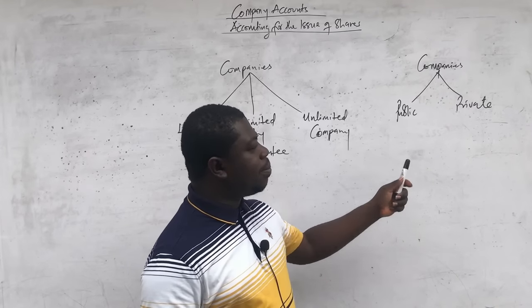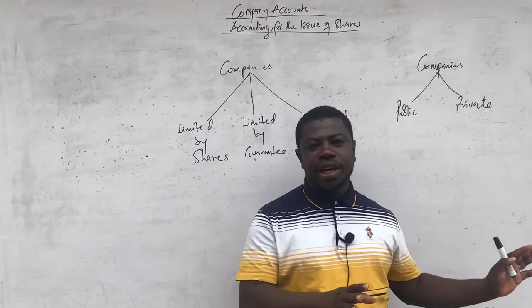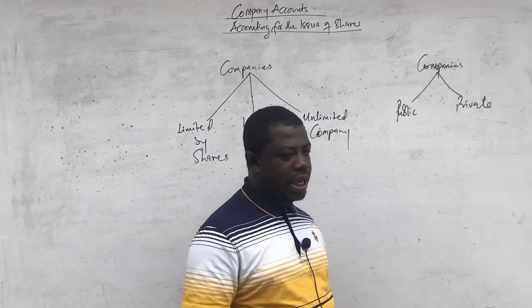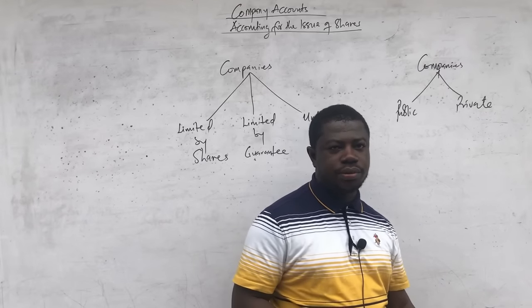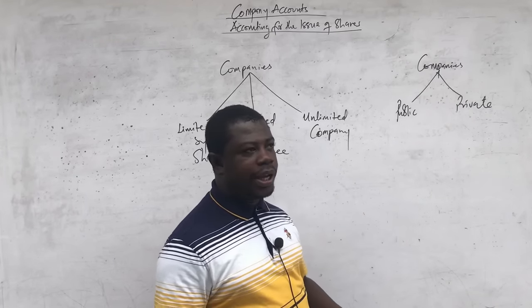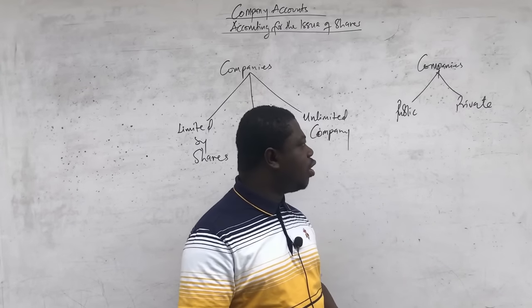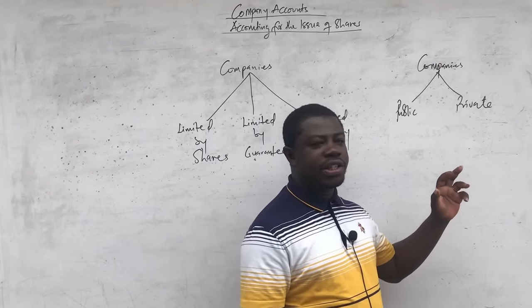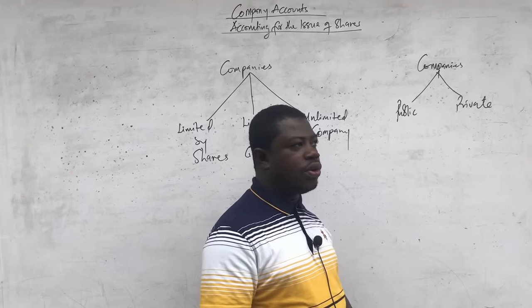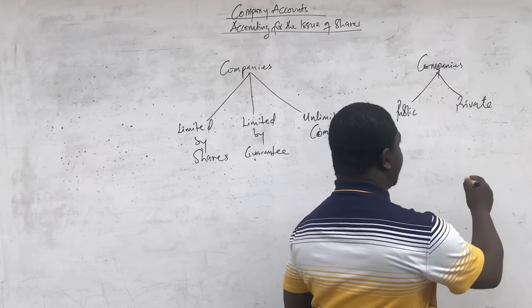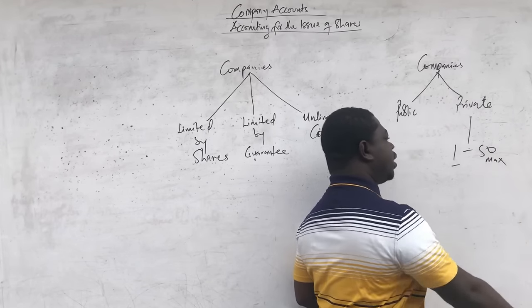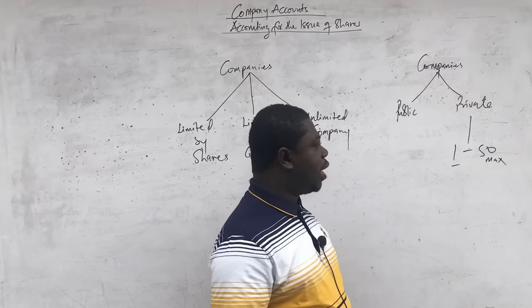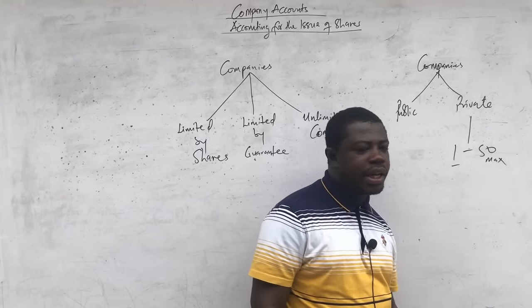When we say a company is a public company, one of the key characteristics is that it is allowed to issue shares to the public, for the public to subscribe and become shareholders. Private companies do not issue shares to the public, and therefore they usually have a limited number of shareholders. In Ghana's Companies Code, that is usually between one and fifty people, and they don't allow the transfer of shares to other people or the issue of shares to the public.